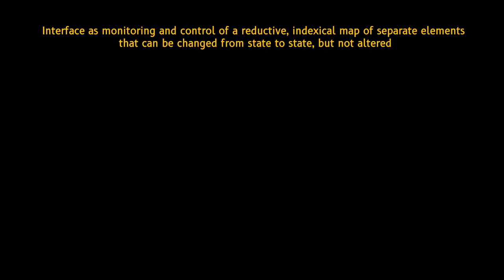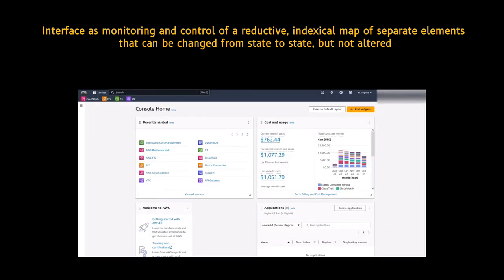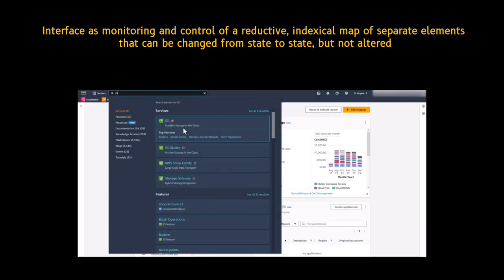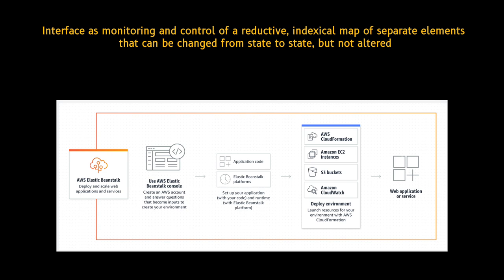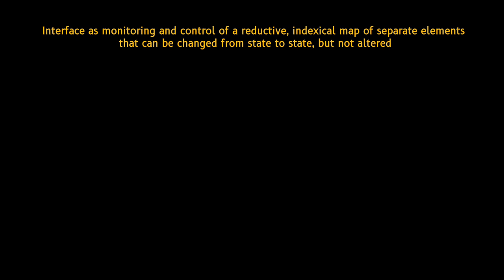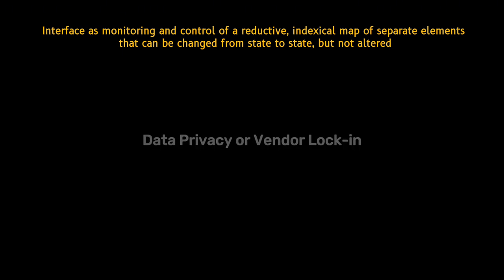Continuing with our cloud platform example, we can see how they provide nice dashboards and APIs to manage vast networks of servers and services. Users can deploy applications, manage databases, and scale resources with a few clicks without needing to understand the intricacies of the underlying infrastructure. This separation makes cloud services accessible, but also hides the complexity and potential issues — such as data privacy or vendor lock-in. It may also lead to de-skilling, where expertise, sometimes crucial, becomes less familiar even to the professionals who once had it.